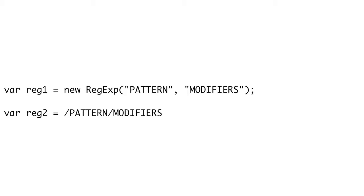We can define a regular expression in one of two ways. First, we could call new RegExp and pass it a string for the pattern and a string for the modifier characters. But JavaScript offers a literal syntax for creating regular expressions using slashes. A slash starts the pattern, and the next slash ends the pattern. Optionally, modifier characters can be placed immediately after the second slash to modify the regular expression.